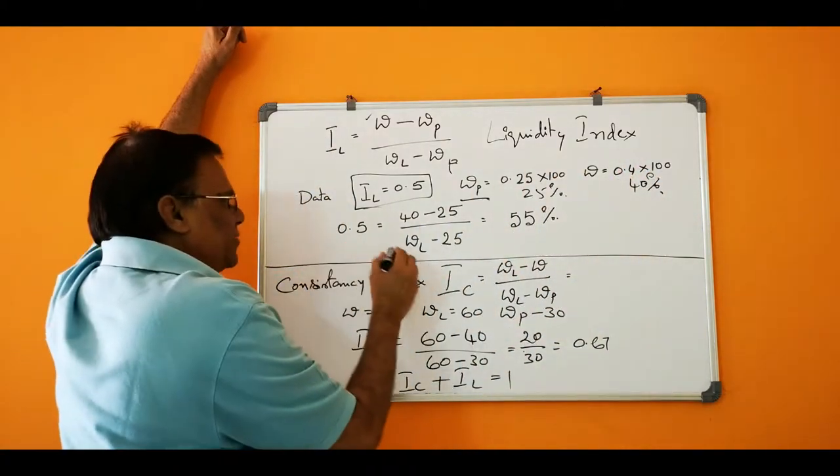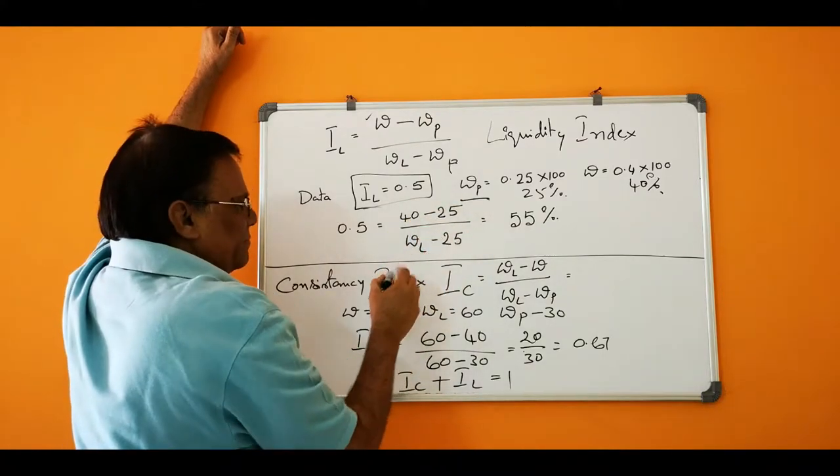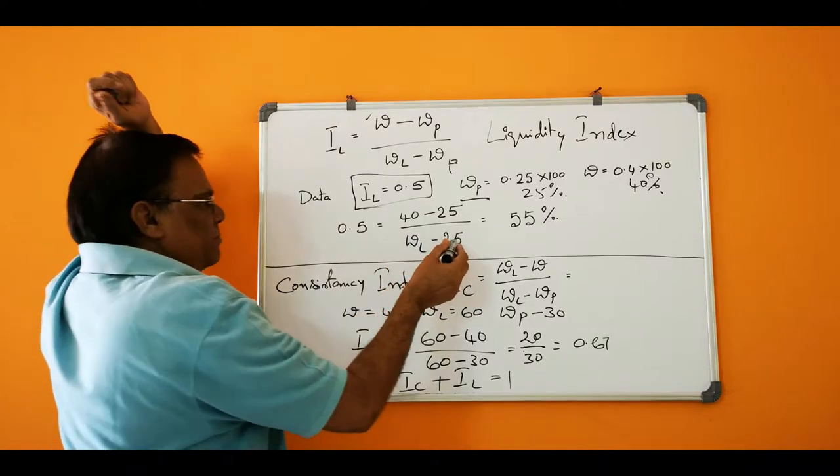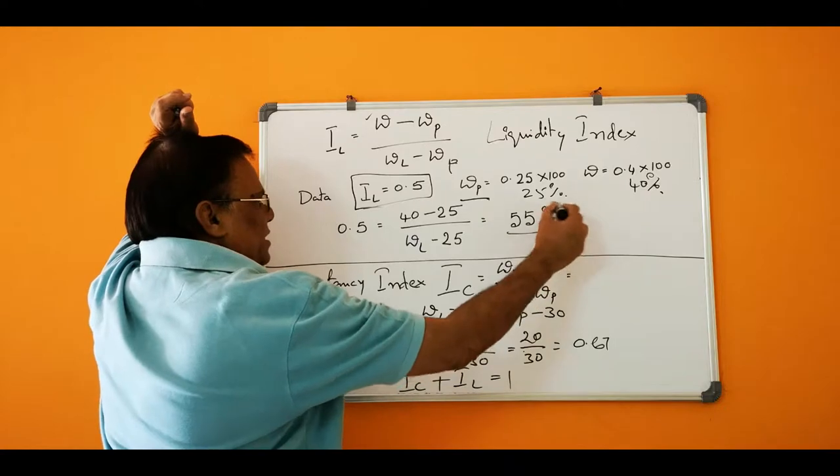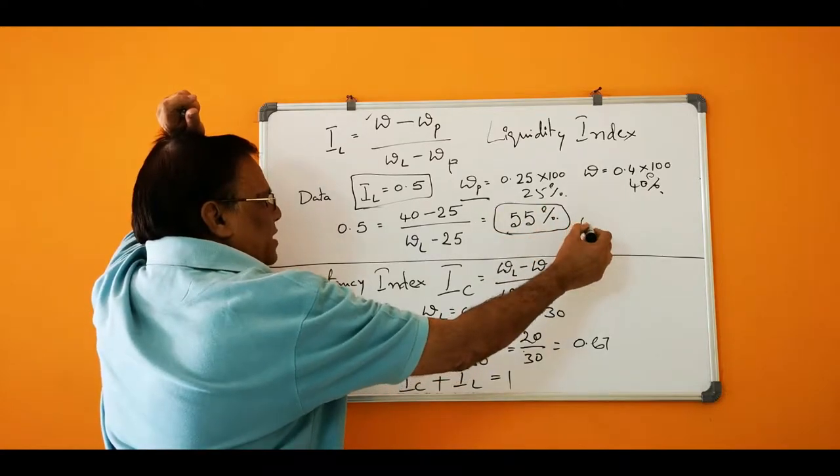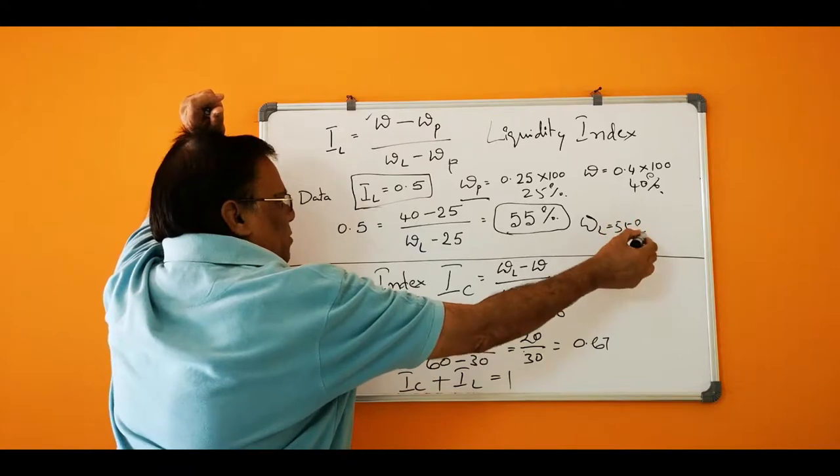So 0.5 equals 40 minus 25 divided by WL minus 25. If you solve this, you will get the liquid limit. Liquid limit is equal to 55%. This is one problem.